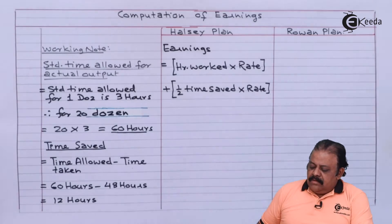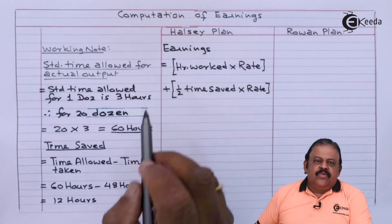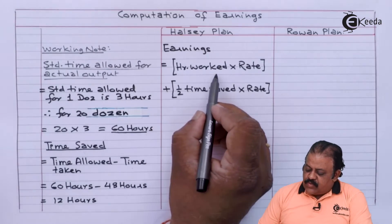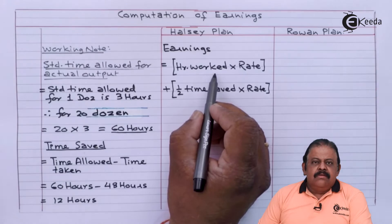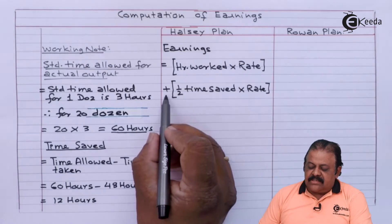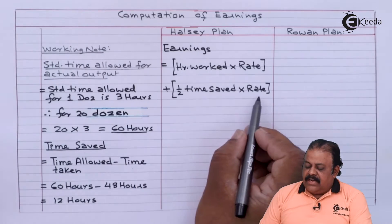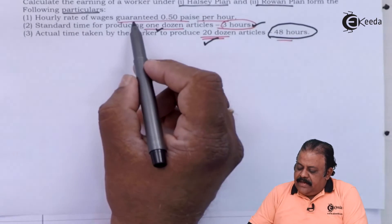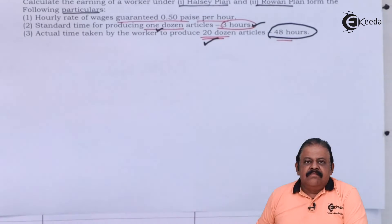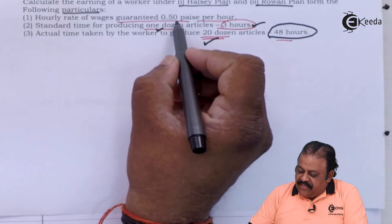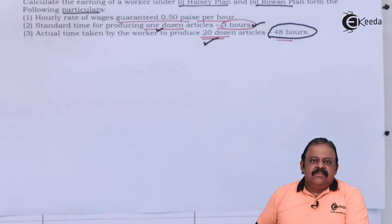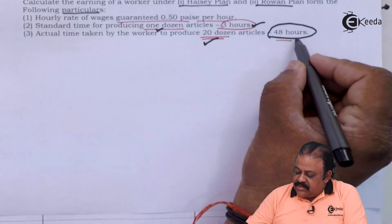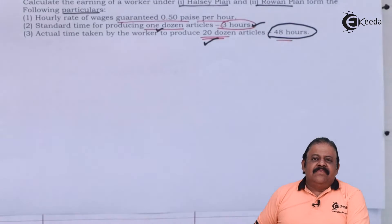To calculate total earnings under the Halsey plan, we use the formula: number of hours worked multiplied by rate, plus half of time saved multiplied by rate. The hourly rate of wages guaranteed is 50 paise per hour, and actual time taken is 48 hours.